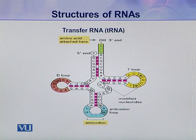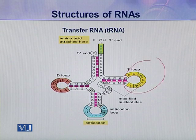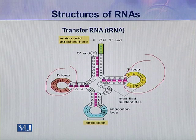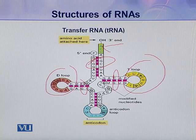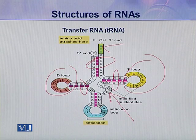This is the secondary structure assumed by a molecule of tRNA. In this structure, you can see there are a number of loops, and these are hairpin loops. At a number of points it is double stranded, and at some points it is single stranded. It also contains a bulge. So this is the secondary structure of a tRNA molecule.